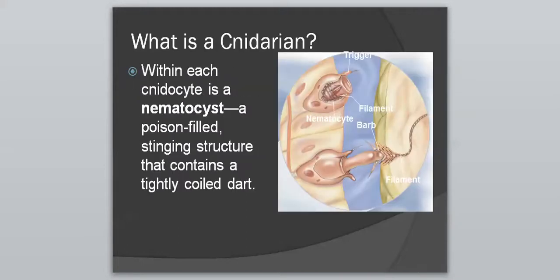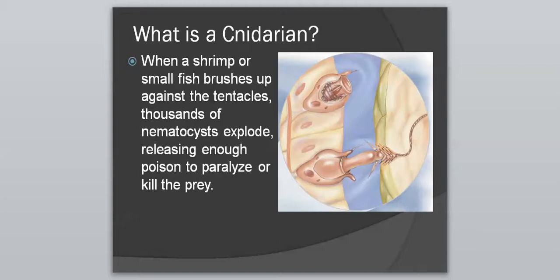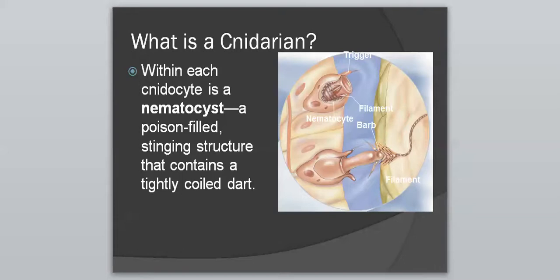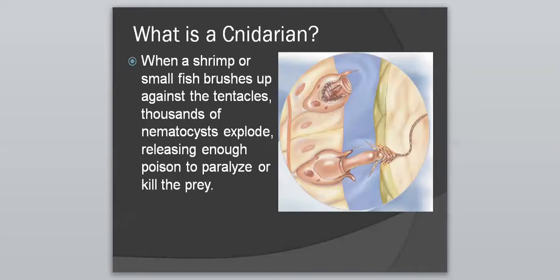Within each cnidocyte is what is known as a nematocyst — another important word to know. This is a poison-filled stinging structure that contains a tightly coiled dart. You can see a tightly coiled structure with a nematocyst waiting inside. When a shrimp or small fish brushes up against the tentacles, thousands of nematocysts explode, releasing enough poison to paralyze or kill the prey. The trigger is hit, causing the nematocyst to explode, shooting out the dart and paralyzing or killing the prey, which can then be devoured by the cnidarians.